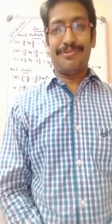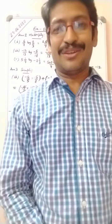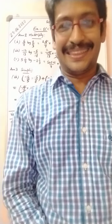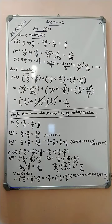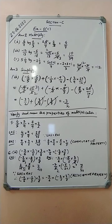In this video we will be going through question number 2, 3, 5 and 6 of exercise 1c. Question number 2: multiply — part number one: six by seven, multiplied by two by three. So six by seven is...